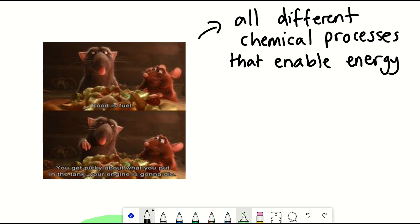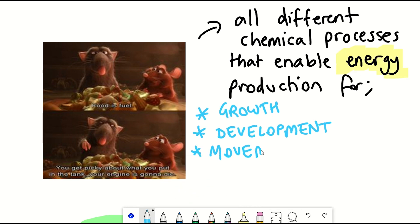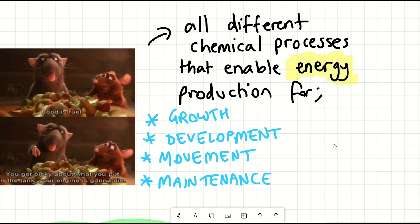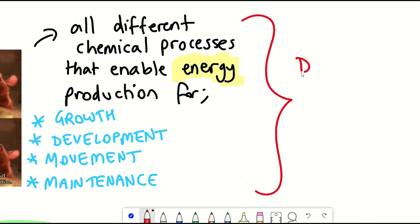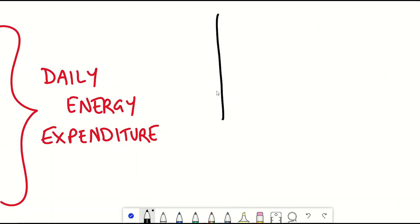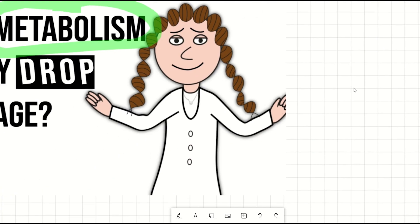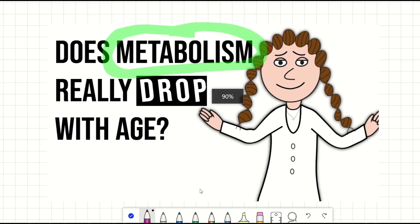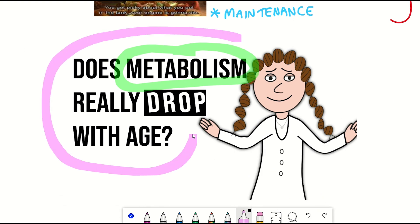metabolism is important for keeping us alive. It describes all the different chemical processes that enable the production of energy for growth, development, movement, and maintenance. The amount of energy required to perform all these different functions is often referred to as our daily energy expenditure. It has commonly been assumed that your metabolism declines with age, and I'm sure that you've probably heard that from many people before, but I'm here to tell you the latest research that has tracked these changes across ages. That rhymed.